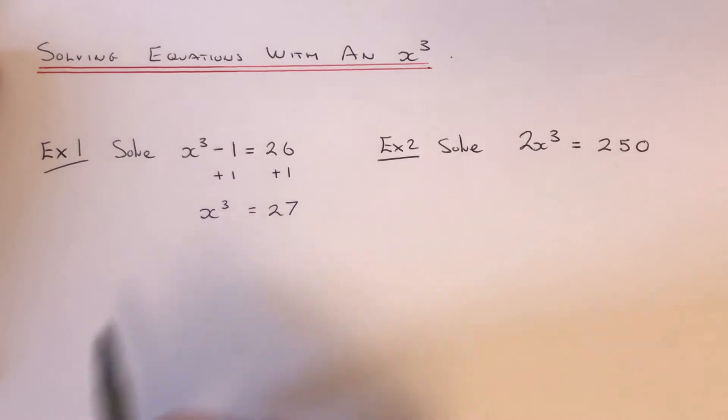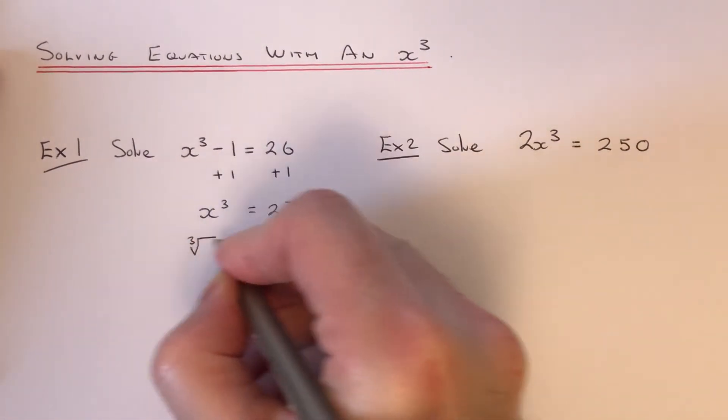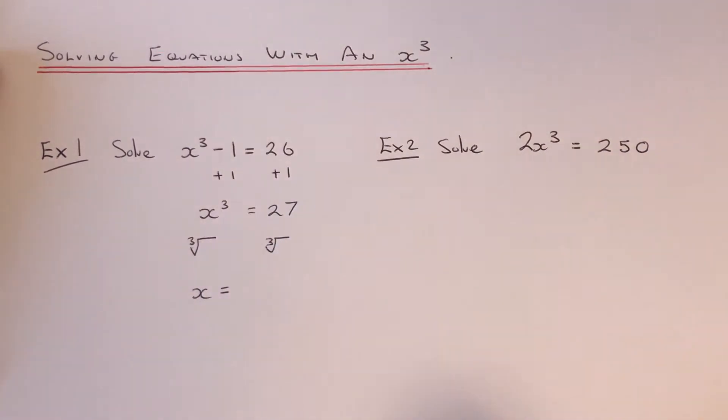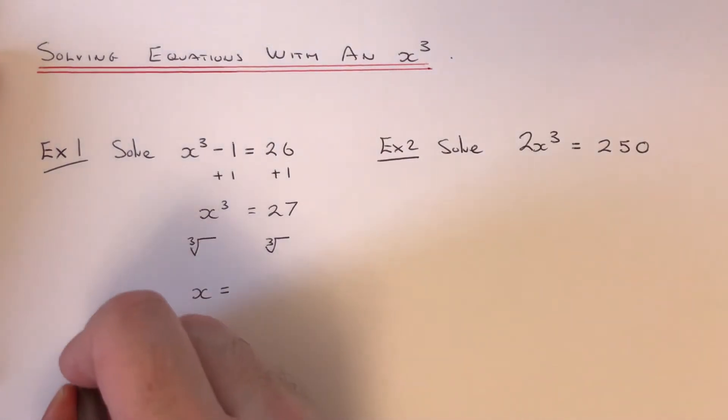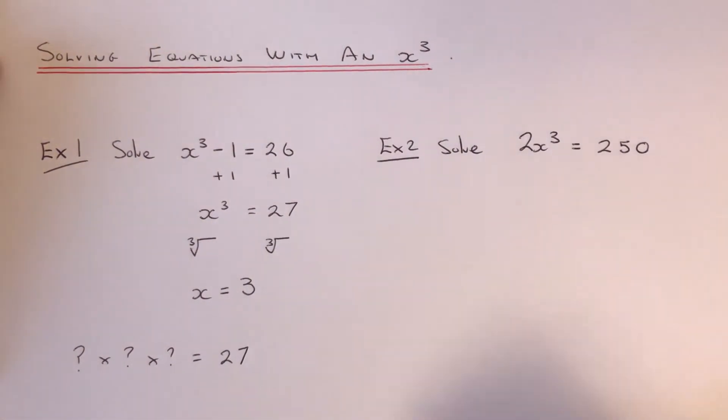And then I need to do the opposite to a cube, which is a cube root. So we just need to figure out the cube root of 27. So this would mean something times something times something gives 27. And the number that you're looking for will be 3, because 3 times 3 times 3 is 27. And that is the only solution.